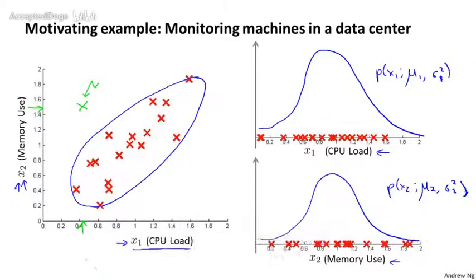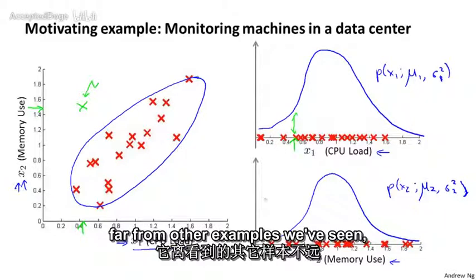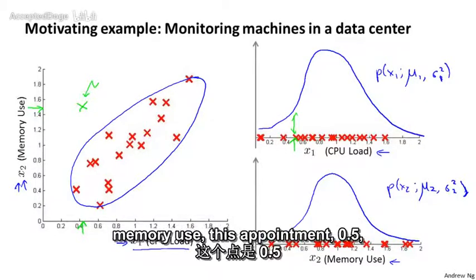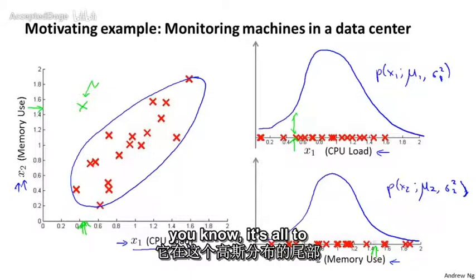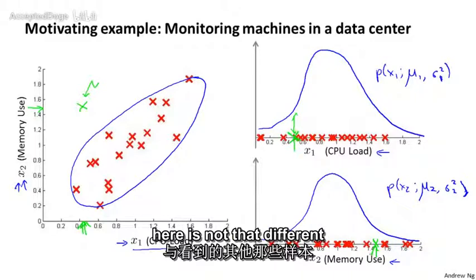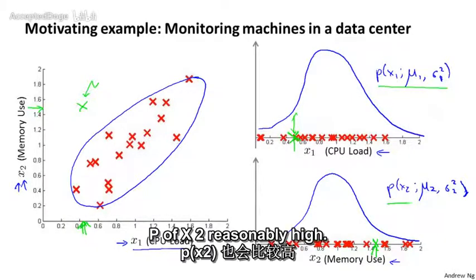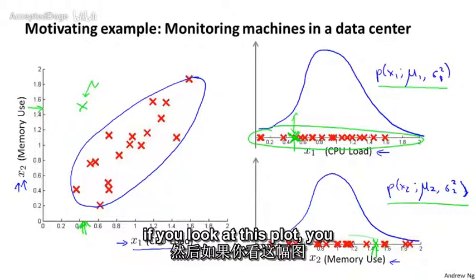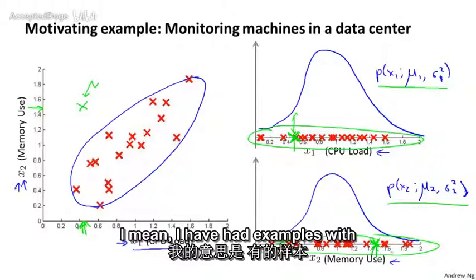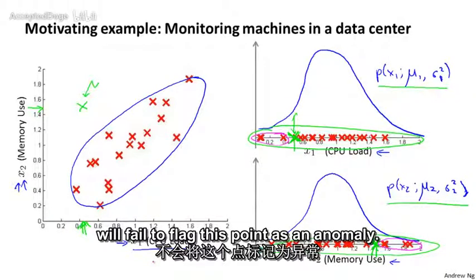But let's see what the anomaly detection algorithm will do. Well, for the CPU load, it puts it at around there, 0.5. And this is reasonably high probability, not that far from other examples we've seen maybe. Whereas for the memory use, it's about 1.5 which is there. Again, it's up towards the tail of the Gaussian but the value here is not that different from many other examples we've seen. And so, P of X1 will be pretty high, reasonably high. P of X2 will be reasonably high. I mean, if you look at this plot, this point here, it doesn't look that bad. And if you look at this plot, across here, it doesn't look that bad. I mean, I have had examples with even greater memory use or with even less CPU use. And so, this example doesn't look that anomalous. And so, the anomaly detection algorithm will fail to flag this point as an anomaly.